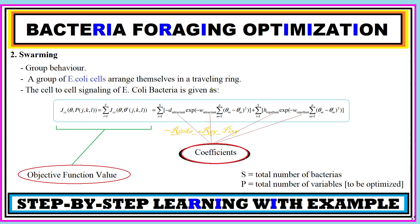The next process is swarming, which represents group behavior. A group of E. coli cells arrange themselves in a traveling ring. The cell signaling of this bacteria is represented by this equation. This is the objective function value. Here we have certain coefficients. s is the total number of bacteria in the search space and p is the total number of variables to be optimized.